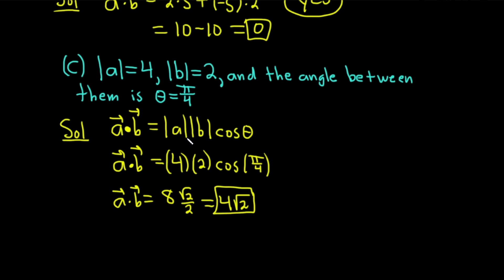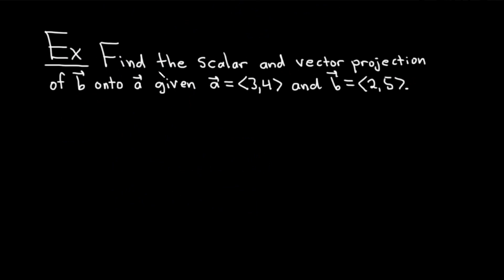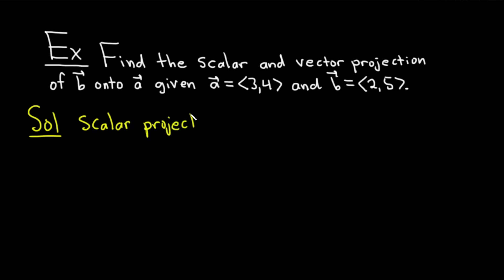Let's do one more example dealing with projections. The question is to find the scalar and vector projection of B onto A, given A equals the vector with components 3, 4 and B equals the vector with components 2, 5. We'll carefully work through this using the formulas. First, we find what's called the scalar projection, written as comp sub A of B — also called the component of B along A.